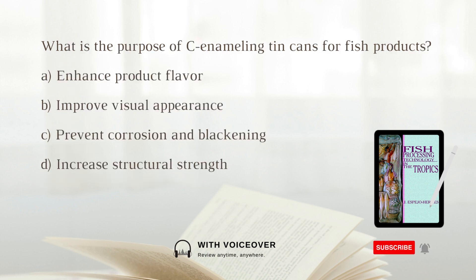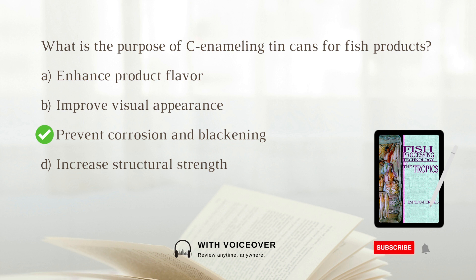What is the purpose of enameling tin cans for fish products? A. Enhanced product flavor. B. Improve visual appearance. C. Prevent corrosion and blackening. D. Increased structural strength. Answer: C. Prevent corrosion and blackening. Enameling prevents blackening of the product caused by the formation of ferrous sulfide and ensures product quality.